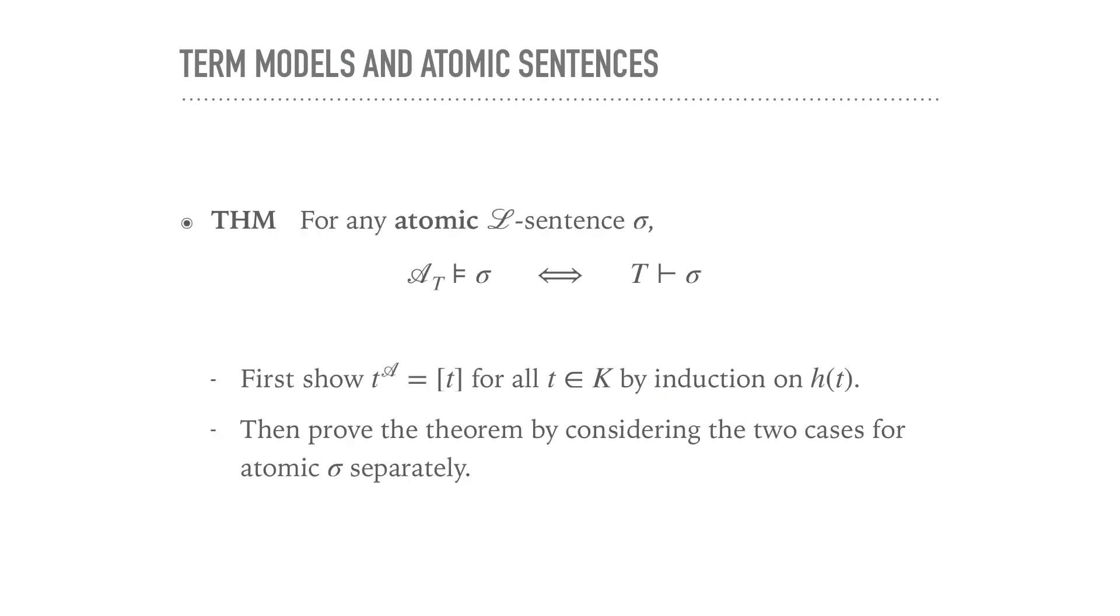So we now have a structure defined that is somehow related to T. And the hope is that this structure, A sub T, so the canonical term structure, would be a model of T. And if we were only concerned with atomic sentences, that's actually true. Because it holds that for atomic sentences σ, this σ is true in A sub T if and only if T proves σ. So for atomic sentences, A sub T is a model of T.